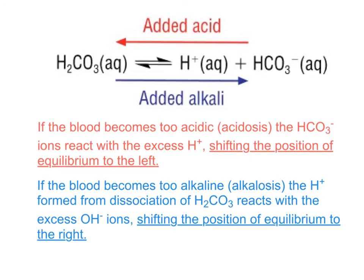If the blood becomes too acidic, a condition called acidosis, the hydrogen carbonate ions react with the excess H+, and they shift the position of equilibrium to the left. However, if the blood becomes too alkaline, a condition called alkalosis, the H+ formed from the dissociation of H2CO3 reacts with the excess OH- ions, and shifts the position of equilibrium to the right.